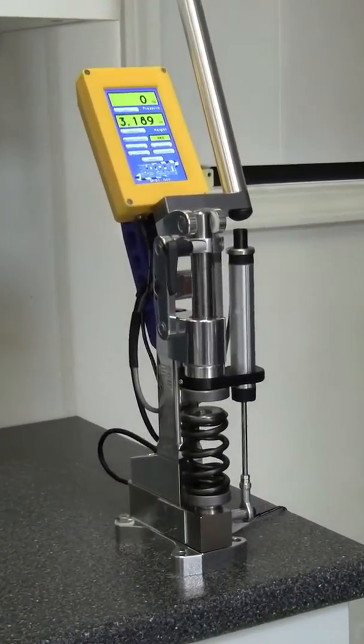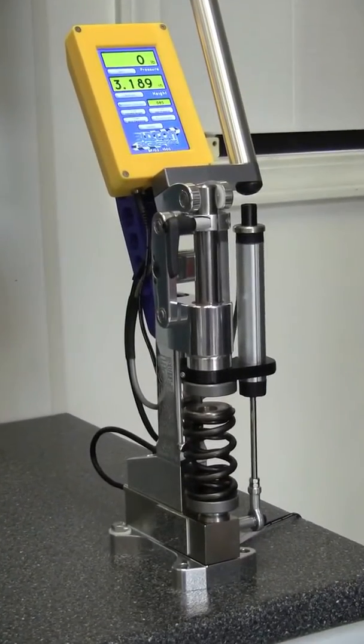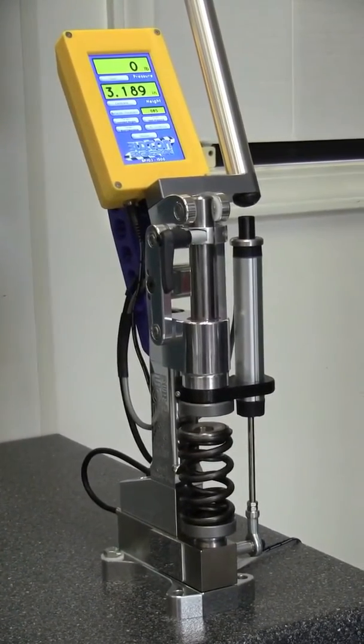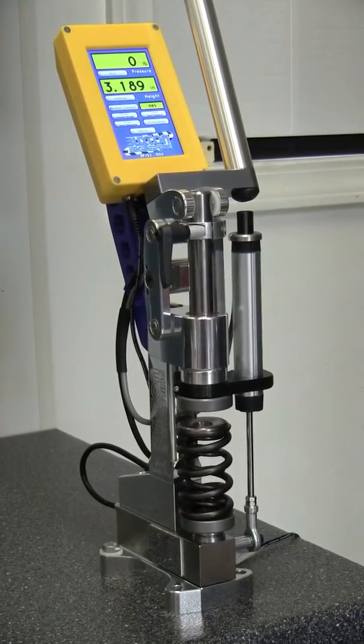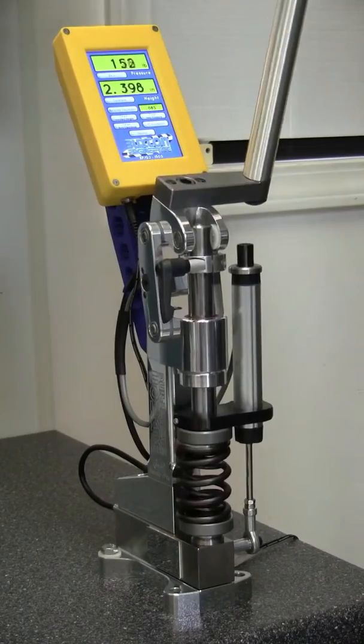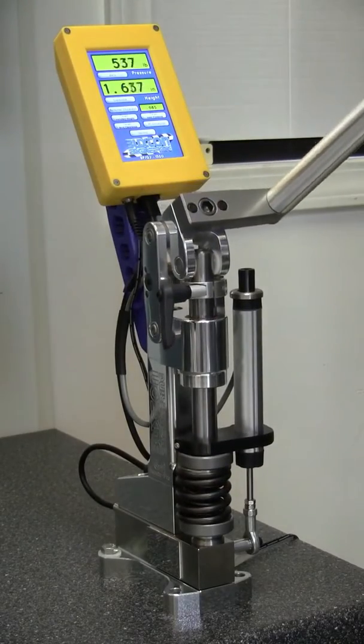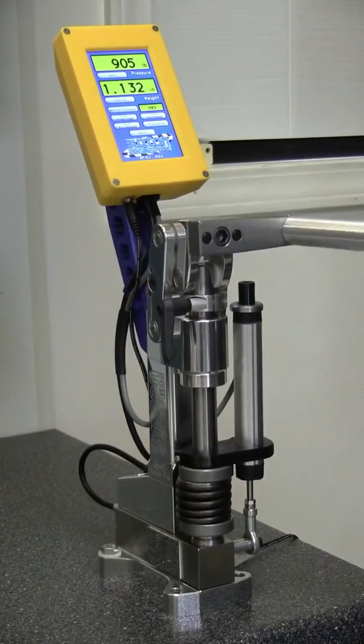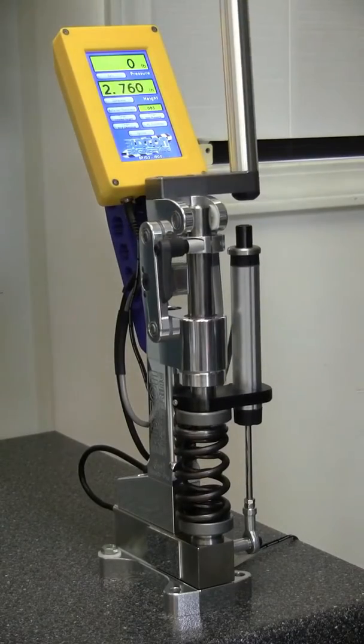Anyone that has used a Rimac or similar tester based off a rack and pinion type system quickly realizes its shortcomings. The handle is never in the correct position to achieve maximum leverage. Another issue is that some of the springs in today's racing engines are reaching upwards of 1,500 pounds, which is almost impossible to compress with a rack gear setup.